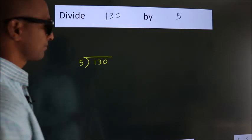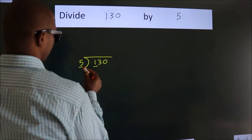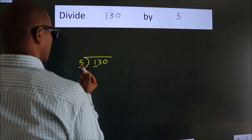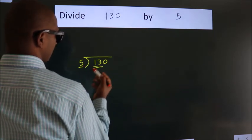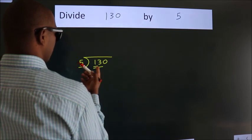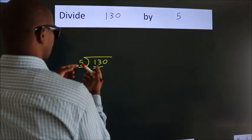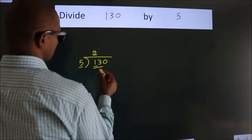Next. Here we have 1, here 5. 1 is smaller than 5, so we should take two numbers: 13. A number close to 13 in the 5 table is 5 times 2, which is 10.